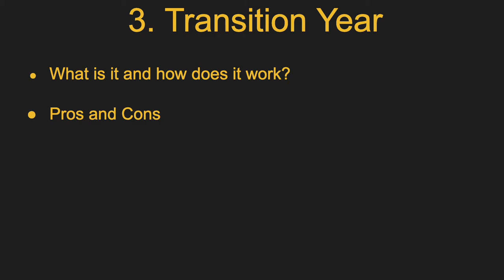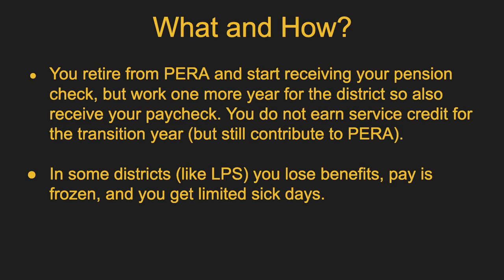After purchasing years, let's talk about a transition year. In some districts, these are referred to as 93-93 or 110-110 years. What a transition year is: some districts allow you to actually retire from PERA, start receiving your pension, but work one more year for your school district so you continue to get paid. The reason for that is because school years run July to June — half the year is in one calendar year and half is in the next — so you don't go over the number of days that's too many to work for a PERA employer while retired. If you choose to do this, you do not earn service credit for that last transition year, but you and your employer do still contribute to PERA.